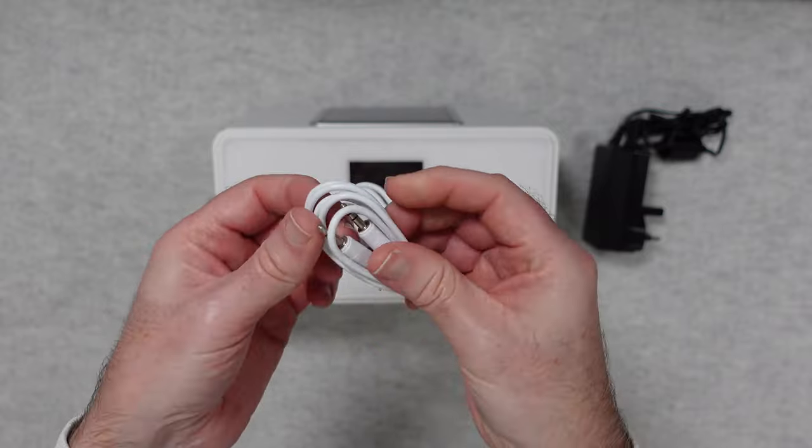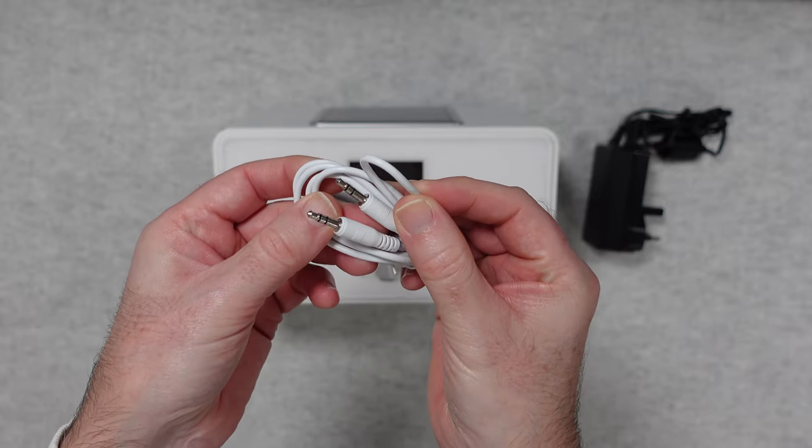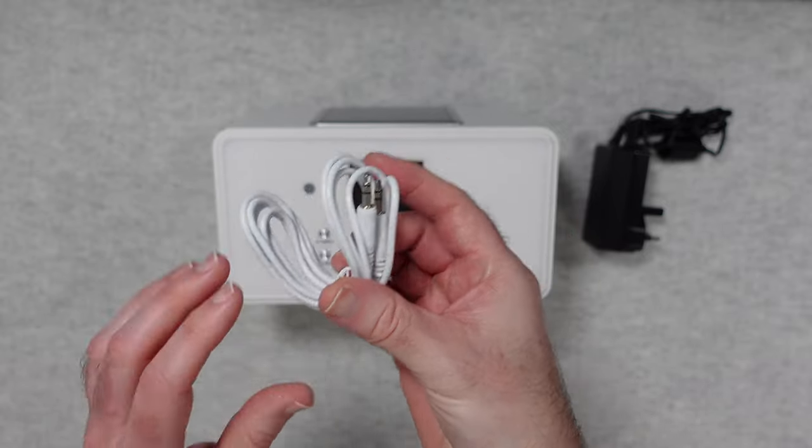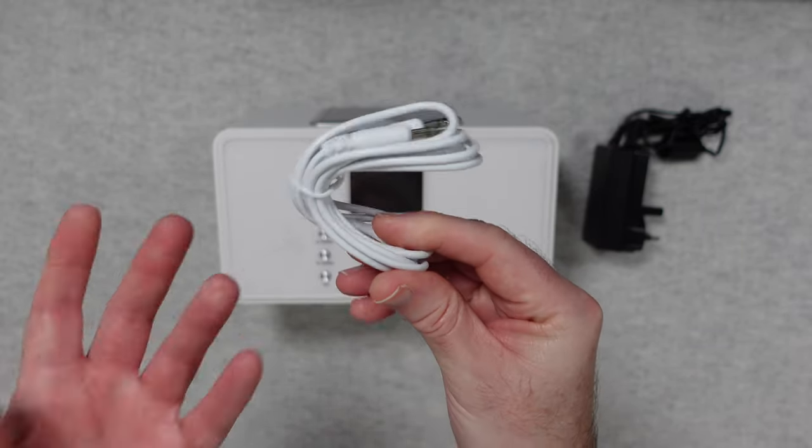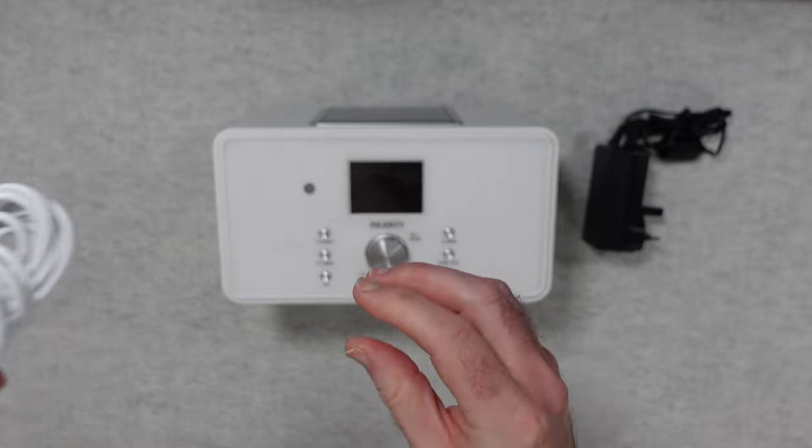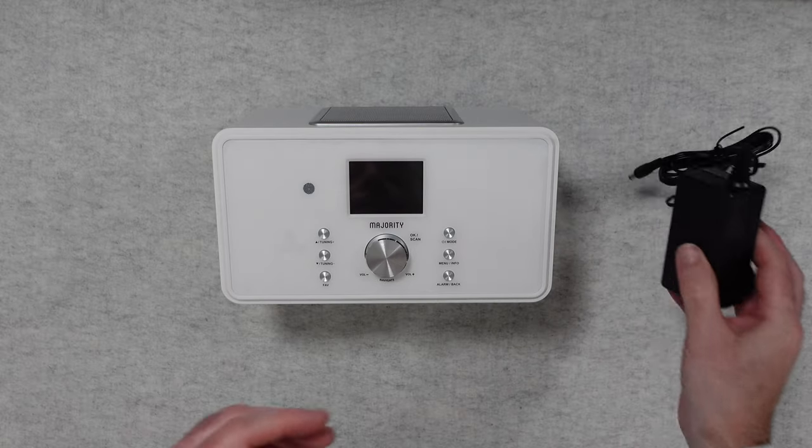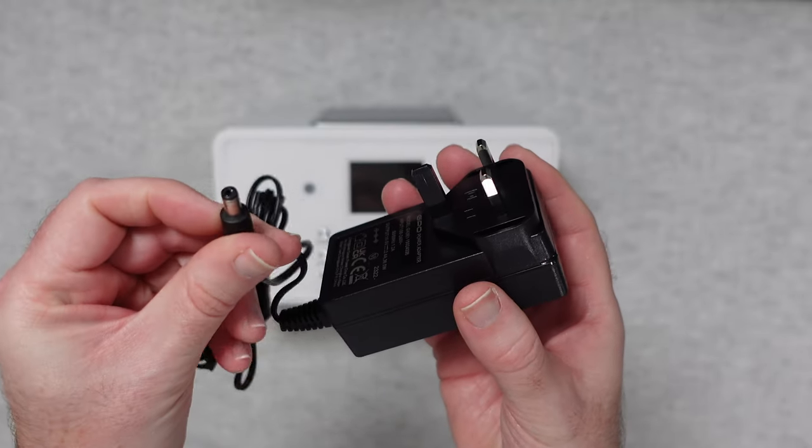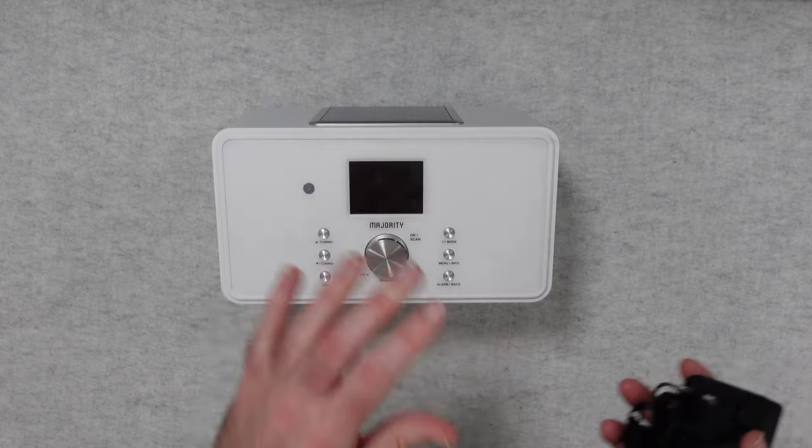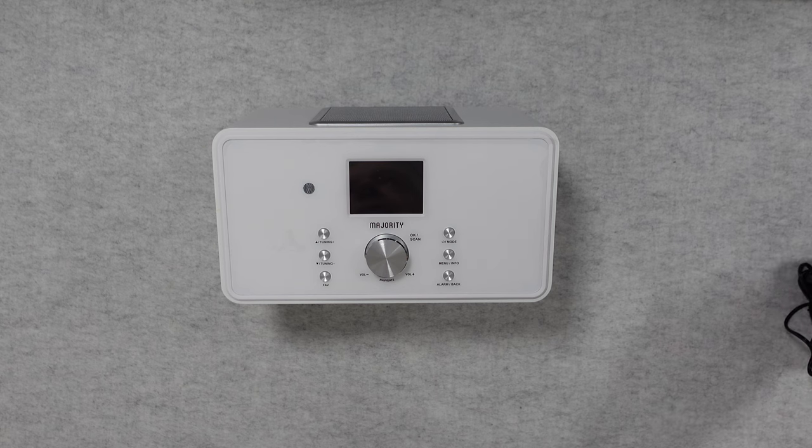We also get an auxiliary cable, three and a half mil to three and a half mil. So you can use this if you want to plug something into the auxiliary port as well as using wireless it's nice to have a wired option as well. And then we get a three pin UK power adapter, barrel type connector on this end to go into the majority barred.